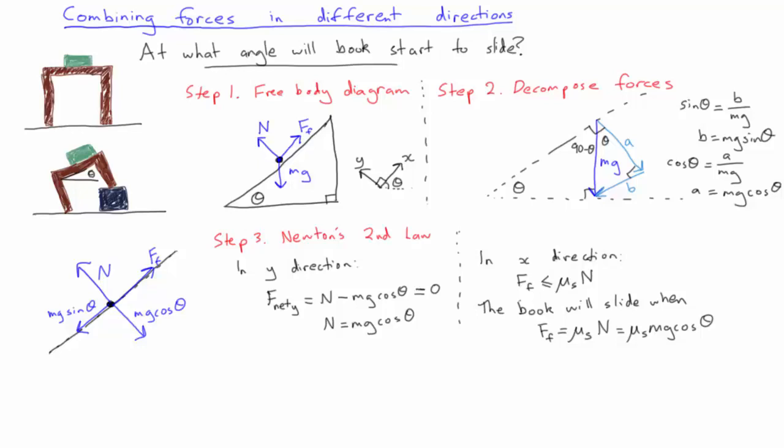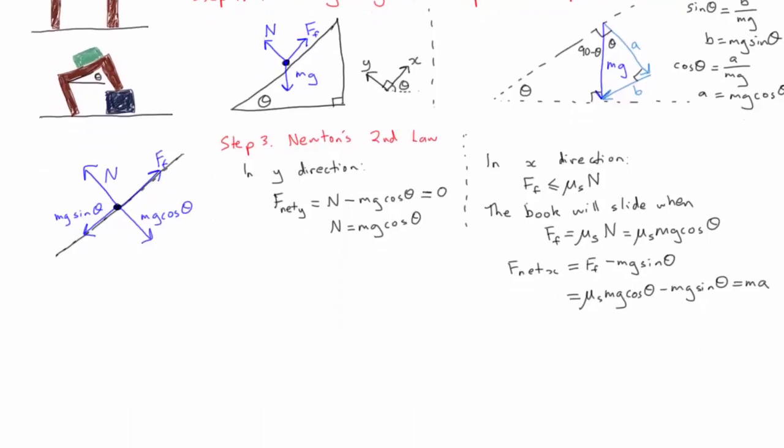So now we can solve Newton's second law for the x direction. The sum of the forces is equal to ma. So here for the sum of the forces we have the frictional force acting upwards and mg sine theta acting downwards in the x direction. So just at the tipping point before the book starts to slide the acceleration will be zero and then we want to solve for the angle theta.